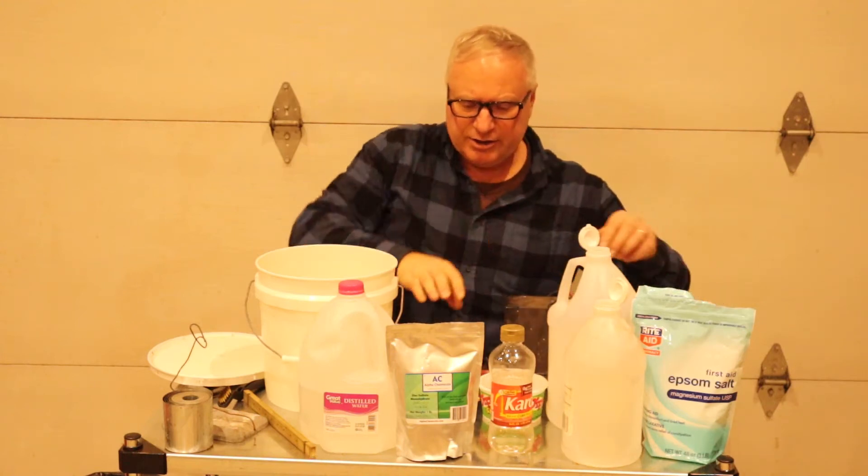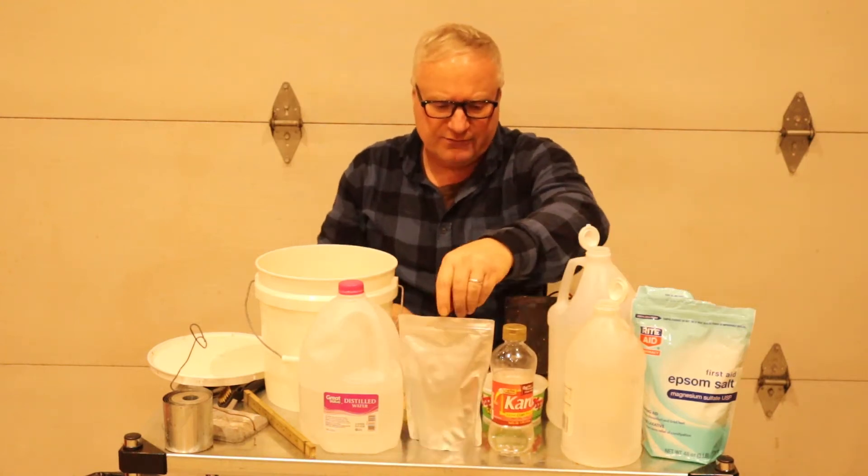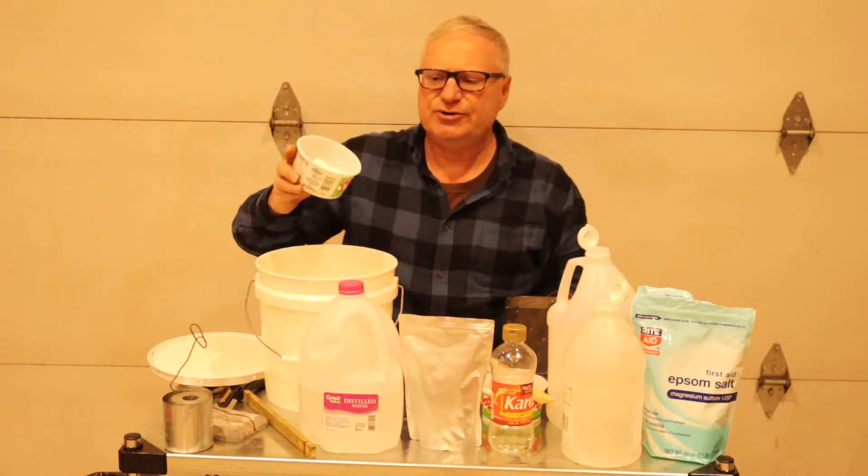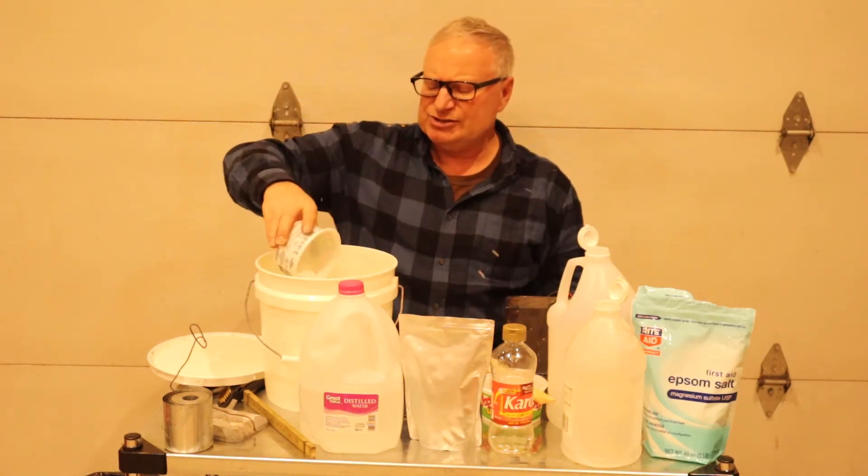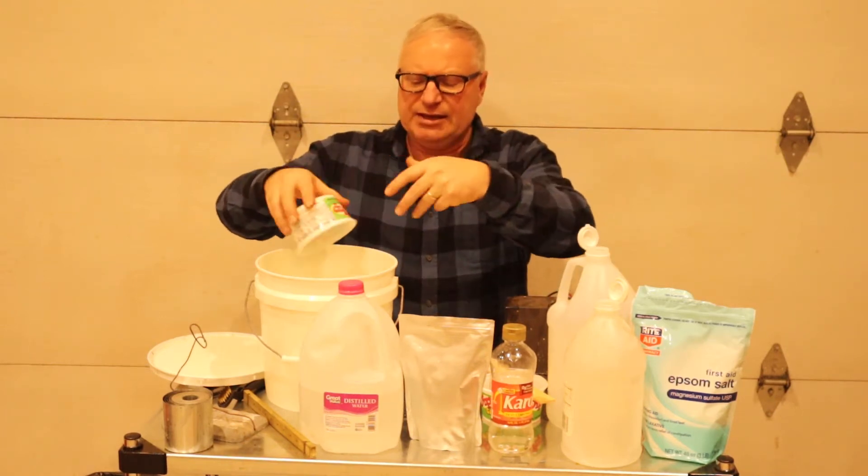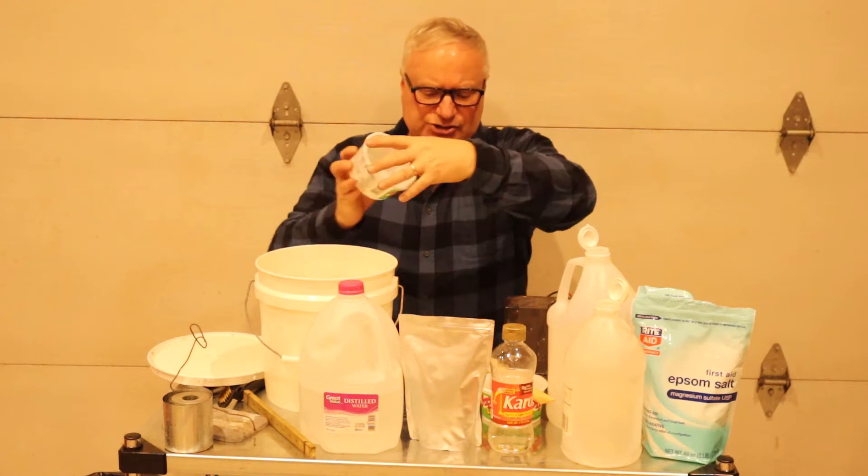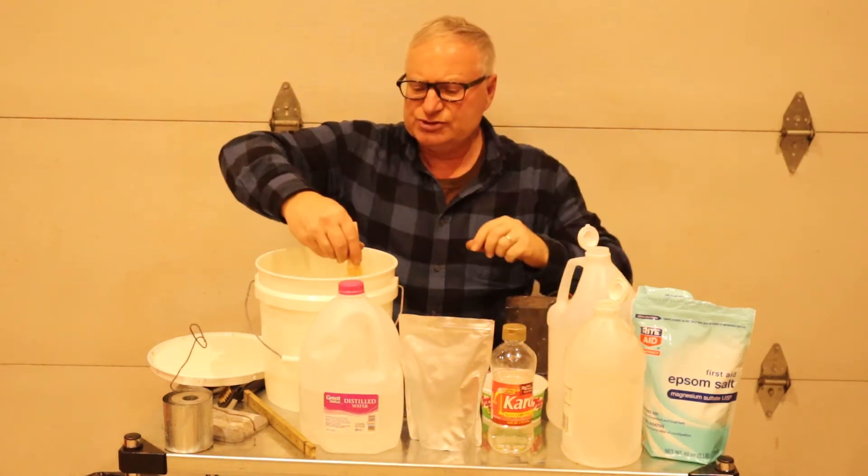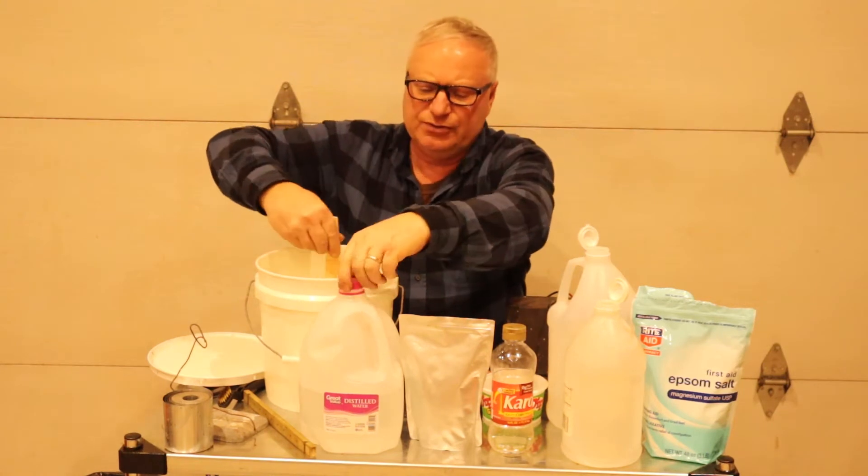Then we'll put in a hundred grams of zinc sulfate, which is basically powdered zinc. What this does is start getting the zinc in solution so it'll actually plate a lot quicker. We'll stir this up and then fill the remaining bucket with some distilled water.